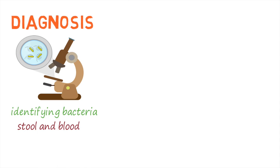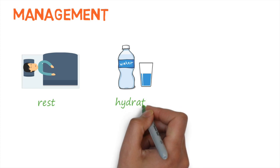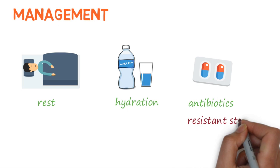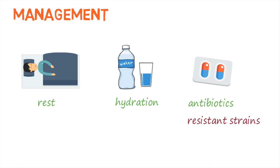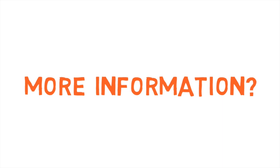Salmonella infections are usually diagnosed by identifying the bacteria in stool samples or blood. Other types of blood tests, like those that check for antibodies, are sometimes used but are not as reliable. In some instances, Salmonella can be isolated from sites like the brain or urine if those sites have been infected. Uncomplicated infections are usually managed by rest and adequate hydration. Antibiotics are used for high-risk groups, complicated cases, and typhoidal fevers. Some Salmonella strains are resistant to antibacterial medication, which is a serious public health problem as these infections are difficult to treat.